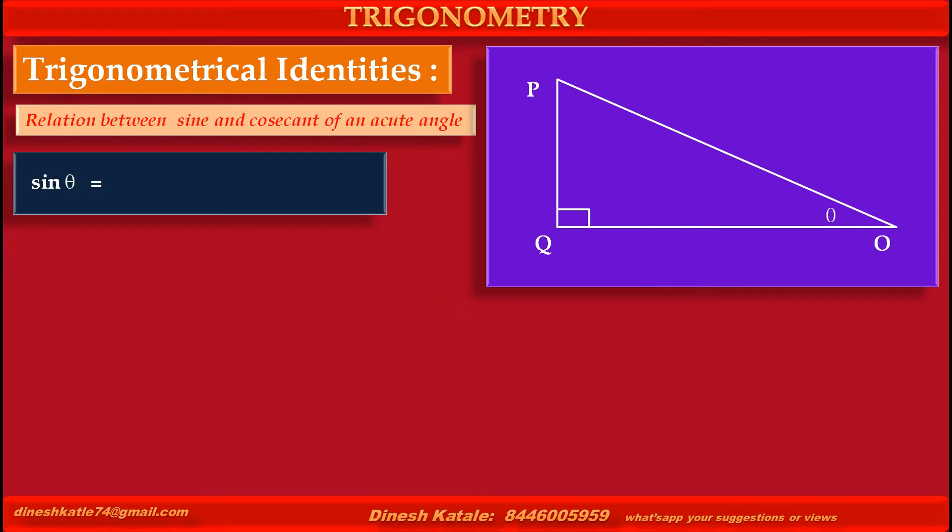Sine theta is equal to opposite side upon hypotenuse is equal to PQ, opposite side of theta, upon OP, hypotenuse. So we get sine theta is equal to PQ upon OP.